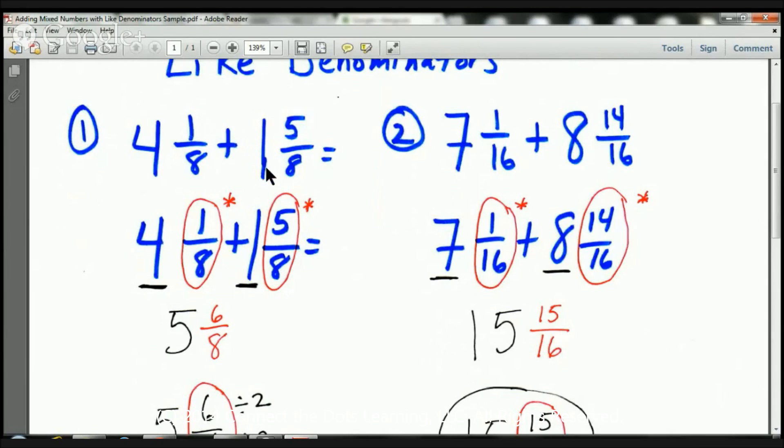Take a look at this mixed number here. We have a 1 and we have a fraction there. We have 5 eighths. This number here is 4 and 1 eighth. This number here is 1 and 5 eighths. So we're adding 4 and 1 eighths plus 1 and 5 eighths.